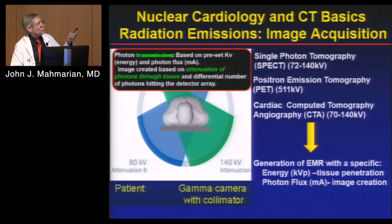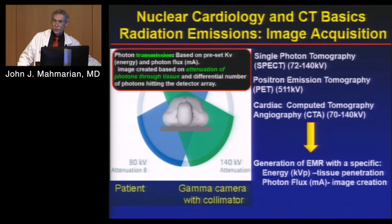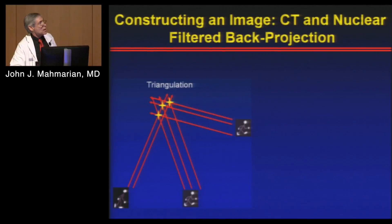In CT, we're doing a transmission image based on a preset kV and a preset photon flux (MA). The image is actually created by attenuation of photons going through the body until they hit the detector arrays. Unlike nuclear, where we try to avoid attenuation, with CT we bank on attenuation — if you don't have attenuation, you don't have an image. If everything goes through the patient 100%, it will all be black. So on CT, we must have differential attenuation.